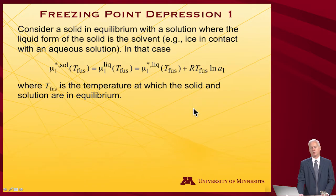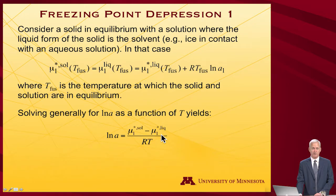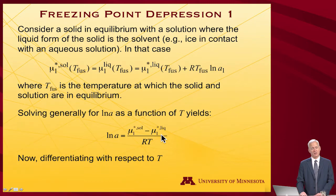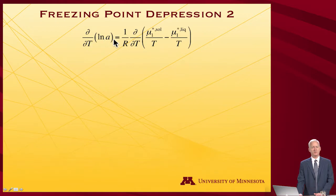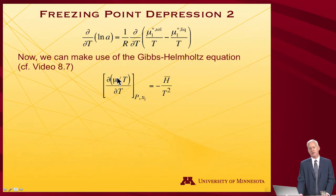In this case, T is still that T_fusion temperature. If we solve generally for the log of the activity as a function of T, just rearranging this expression, I get that log of the activity equals the pure solid chemical potential minus the pure liquid chemical potential, divided by RT. If I differentiate that with respect to temperature — taking the partial of log A with respect to T — and pull out the constant 1/R, we need the partial derivative of these chemical potentials with respect to T. We know how to do that: it's the Gibbs-Helmholtz equation, which we saw in video 8.7. Taking that partial derivative gives negative the enthalpy divided by T squared.